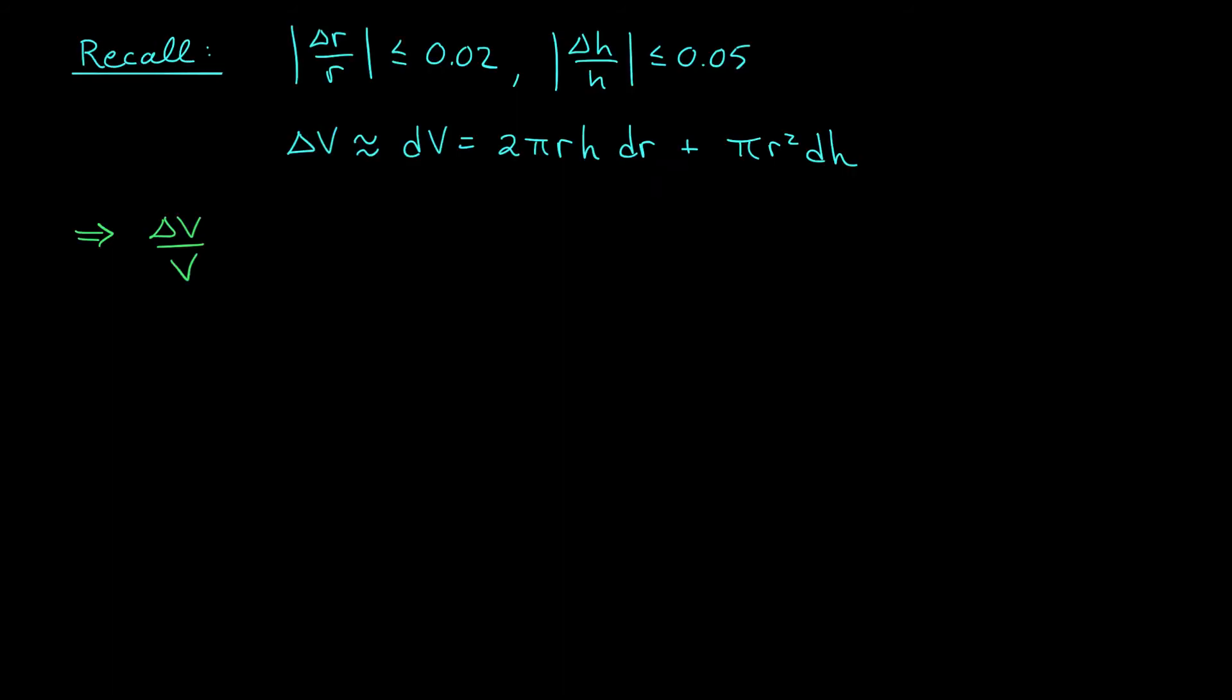Okay folks, up to now we found upper bounds on the absolute value of delta r over r, the absolute value of delta h over h, and we found an approximation for the change in our volume delta V. We're interested in estimating this quantity, delta V over V. So I'm going to divide both sides of this expression by my volume, πr²h. What I get is delta V over V is approximately equal to 2πrh dr divided by πr²h plus πr² dh divided by πr²h.